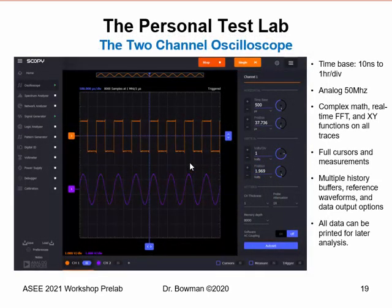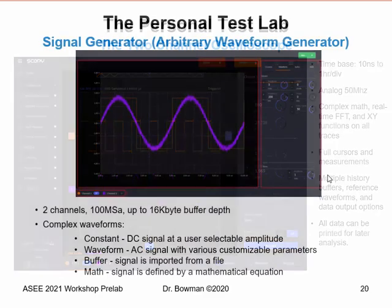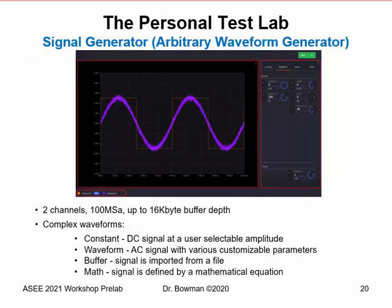The personal test lab two-channel oscilloscope has a time base from 10 nanoseconds to one hour per division, with approximately 50 MHz bandwidth and all standard oscilloscope functions. The signal generator — also called an arbitrary waveform generator — has two channels, 100 mega-samples per second with up to 16 kilobyte buffer depth. You can generate complex waveforms: DC waveforms as an additional power supply, AC waveforms like sine and square with customizable parameters, buffer signals imported from a file, or mathematically defined signals — for example, an amplitude modulated waveform defined by equation.